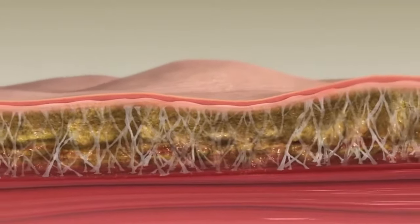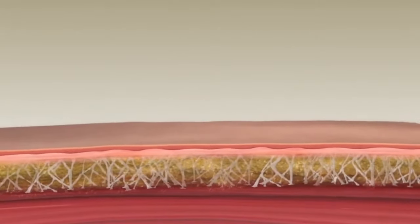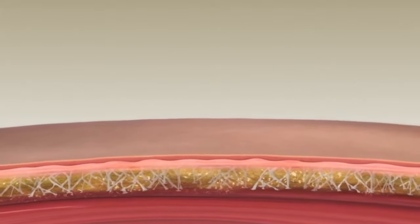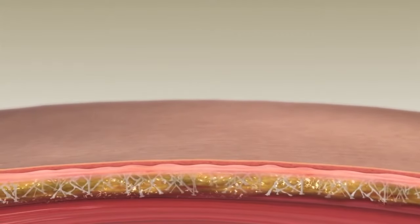Uniform RF thermal exposure aids, smooths, and evens contour results. Thermal contraction of fibrous septae and dermal collagen results in immediate body contouring, which continues to improve over the next six months.